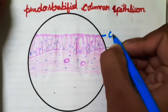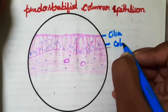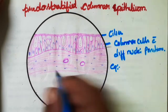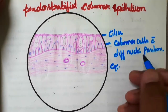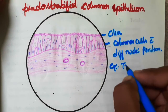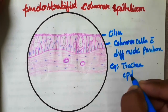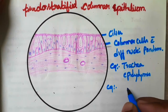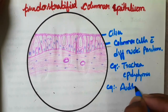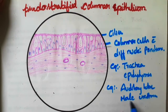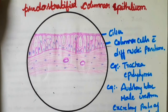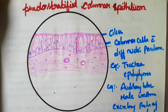These are the cilia on columnar cells with different nuclear positions. Examples of pseudostratified ciliated columnar epithelium include the upper respiratory tract, such as the trachea, and the epididymis. Examples of non-ciliated pseudostratified columnar epithelium include the auditory tube, male urethra, and the excretory parts of secretory glands — all lined by pseudostratified columnar epithelium.